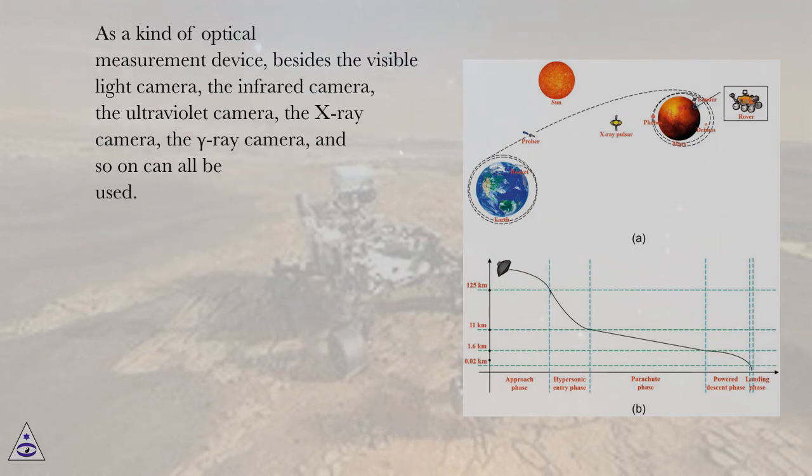As a kind of optical measurement device, besides the visible light camera, the infrared camera, the ultraviolet camera, the x-ray camera, the gamma ray camera, and so on can all be used.